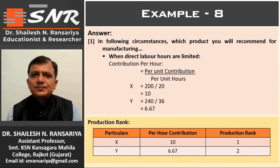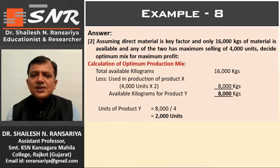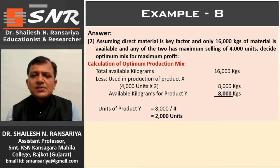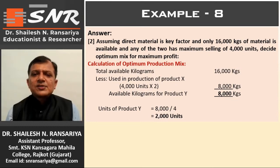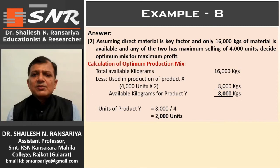Now answer number 2: assuming direct material is the key factor and only 16,000 kilograms of material is available, and either product has a maximum selling of 4,000 units — decide the optimum mix for maximum profit. We calculate the optimum production mix based on material as key factor. Already we have given production rank: Product X has first rank and Product Y has second rank. So we will produce Product X first, and from the remaining material produce Product Y.